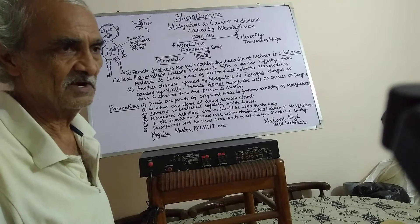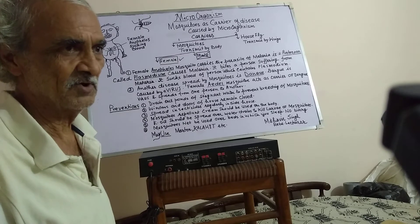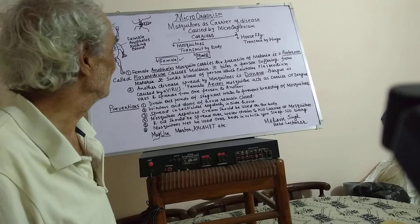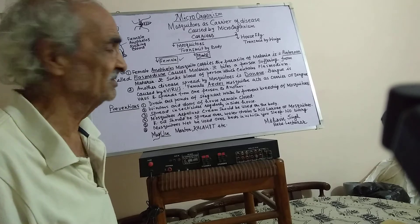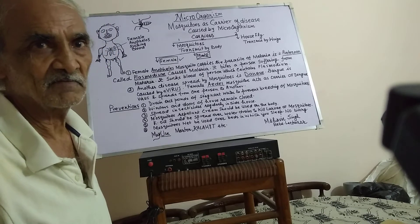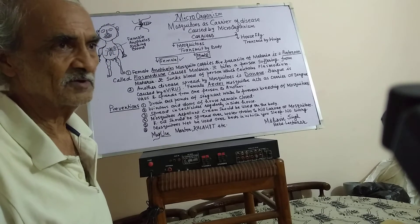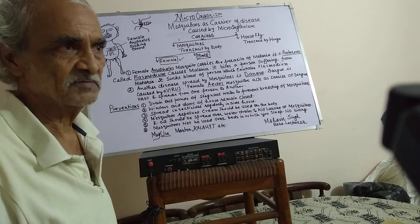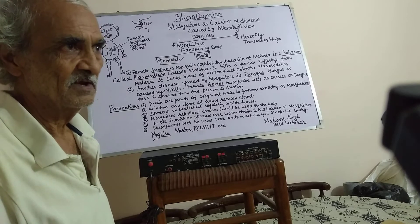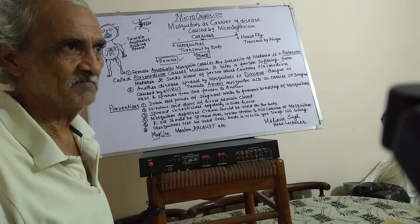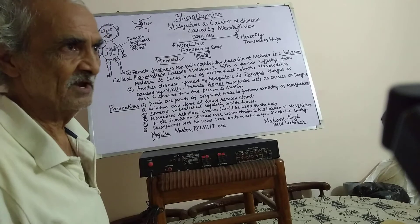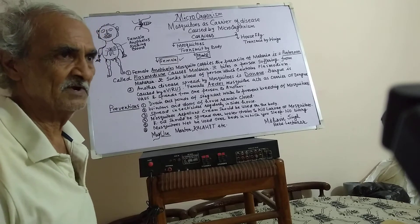The most common carriers are mosquitoes and houseflies. We will discuss houseflies later on. Houseflies carry microbes with the help of their wings.